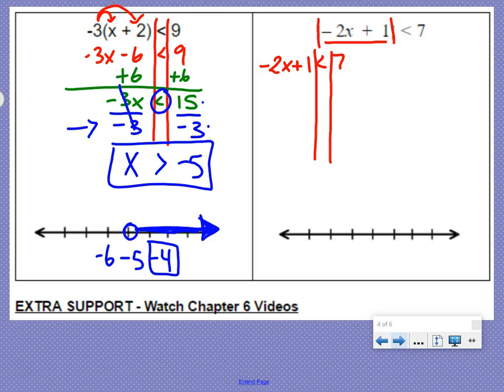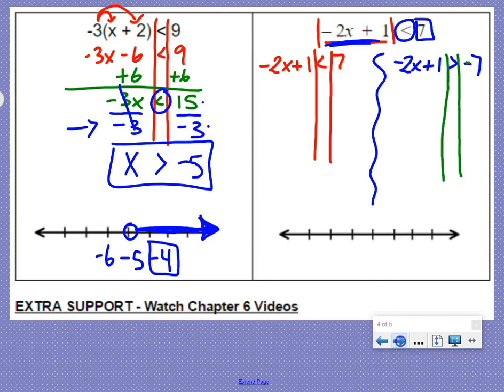For our second situation, we're going to keep this piece in the middle, negative 2x plus 1. However, we are going to change the less than to greater than, the positive 7 to negative 7. Okay, so that's the big difference. We have that second situation where we have to flip around this inequality sign and flip from positive to negative.